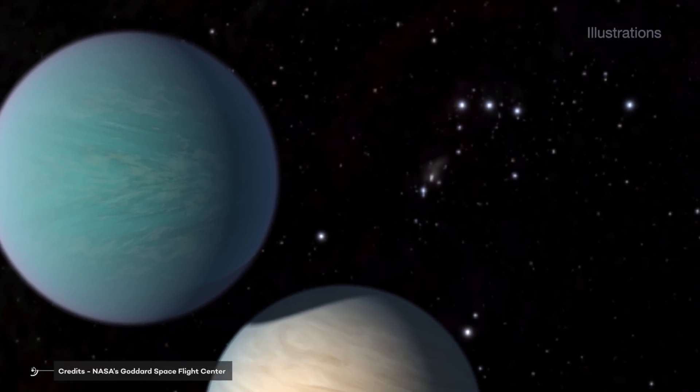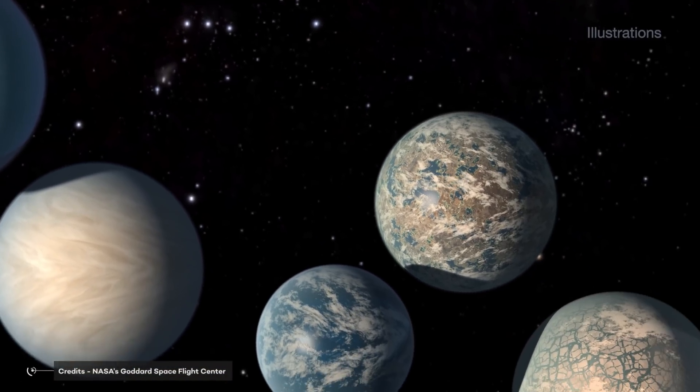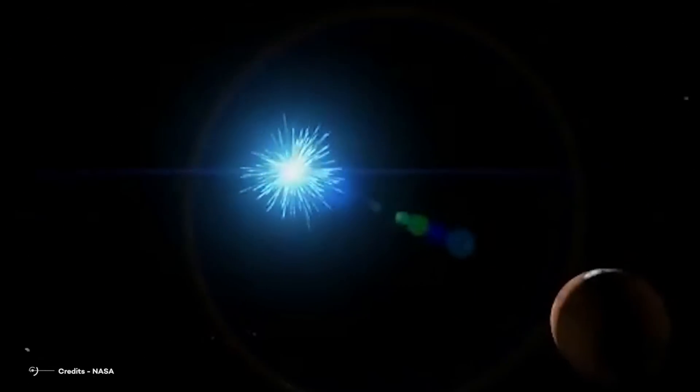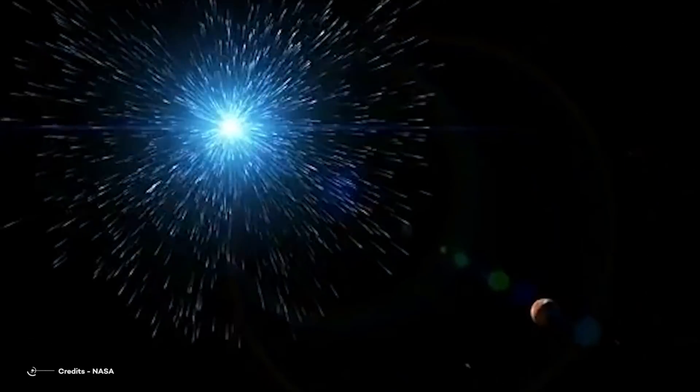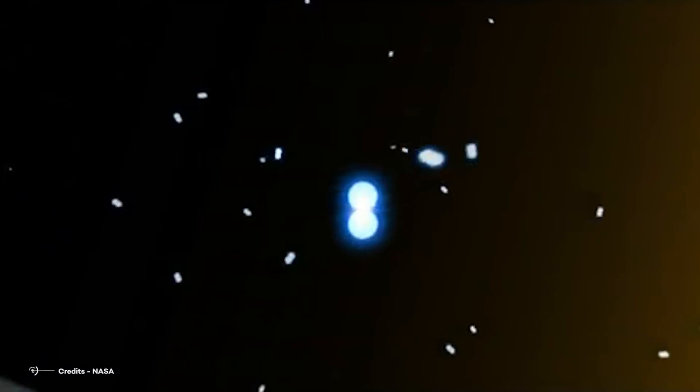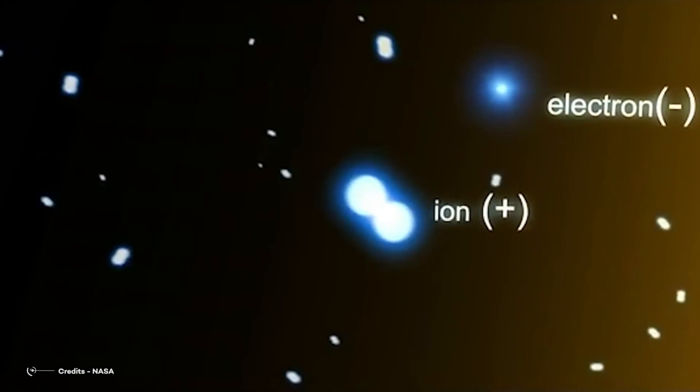Detecting atmospheres around the TRAPPIST-1 planets would have major implications for the study of exoplanets. For instance, it's widely believed among the scientific community that if a planet is this close to its host star, solar flares from the star might destroy and completely remove its atmosphere.